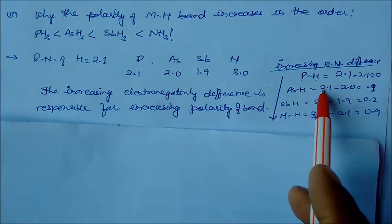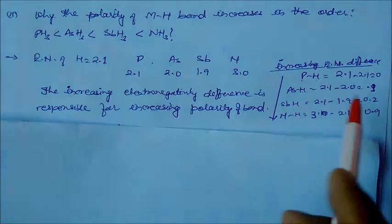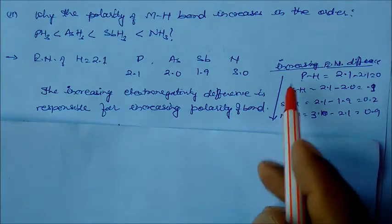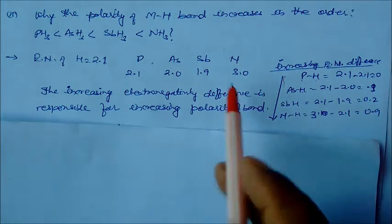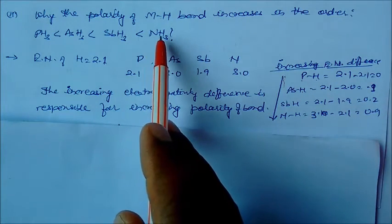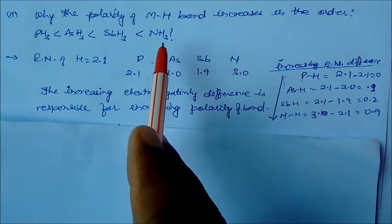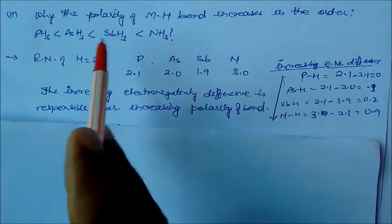Electronegativity difference between nitrogen-hydrogen: if you see phosphorus-hydrogen, this is 2.1 for hydrogen and phosphorus is zero. But in case of arsenic hydride, this is 0.9. This is increasing order. So this electron difference is increasing. More electron difference between nitrogen-hydrogen, so this polarity is more higher between M-H bond rather than the others.